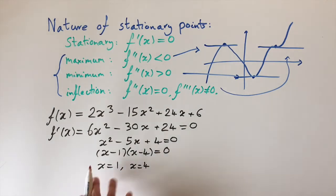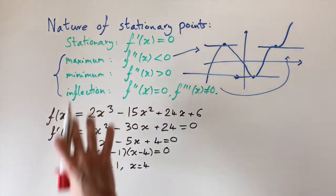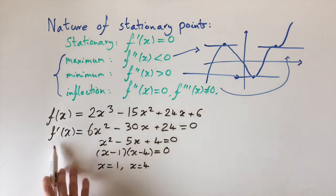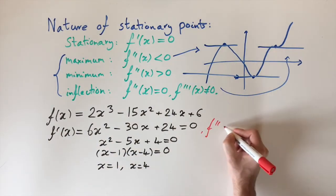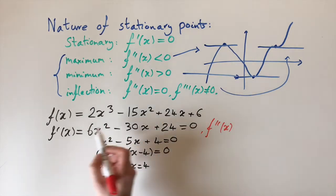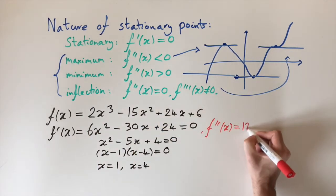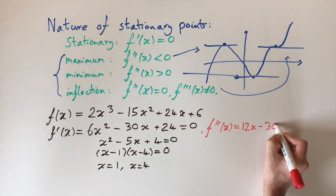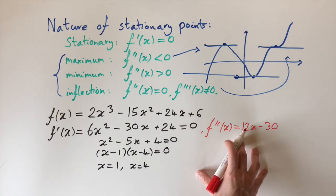Now we know the stationary points, but we don't know what type they are. To find this out, we use our conditions. For all of them, we need to find the second derivative. So we calculate f″(x) — just differentiate the first derivative expression — and we get 12x − 30, because the constant disappears. So this is the second derivative of f.